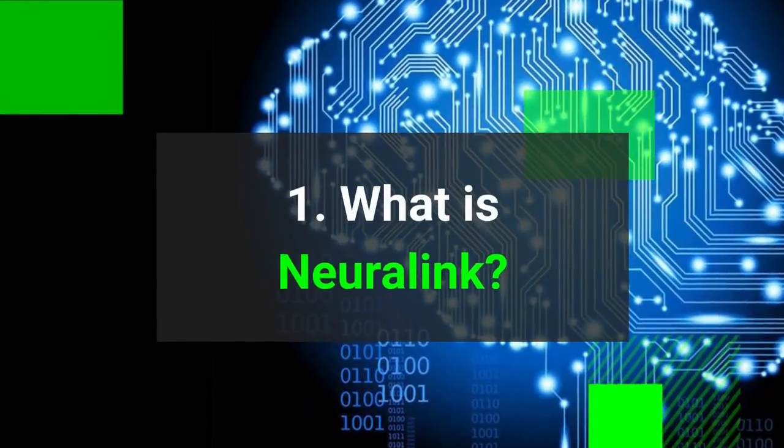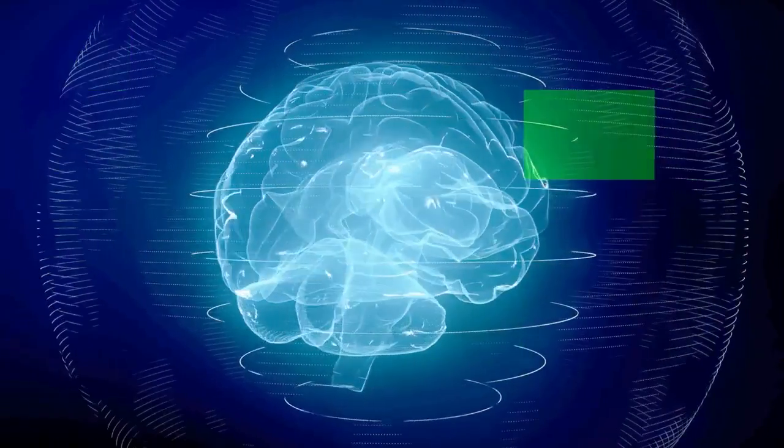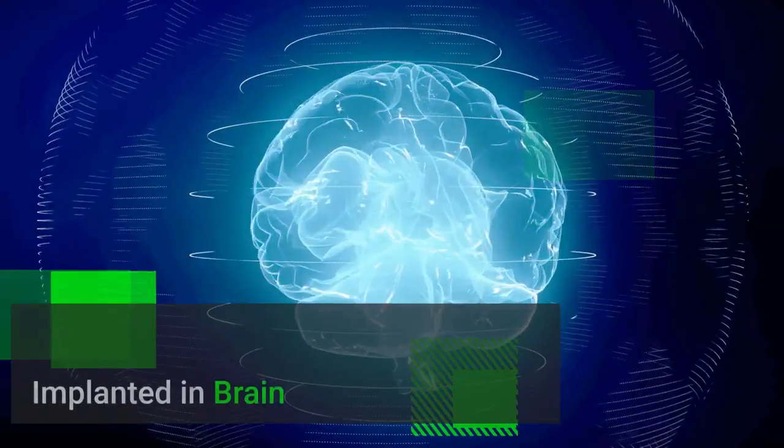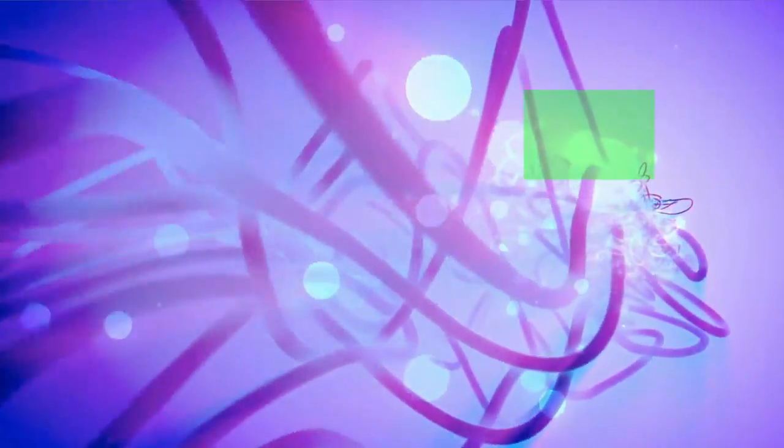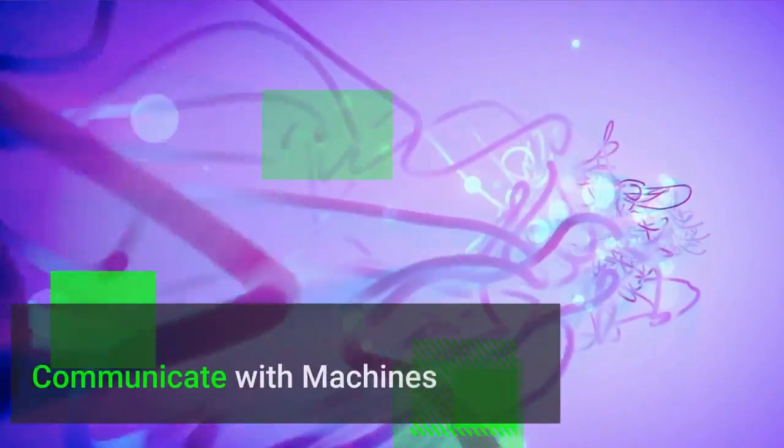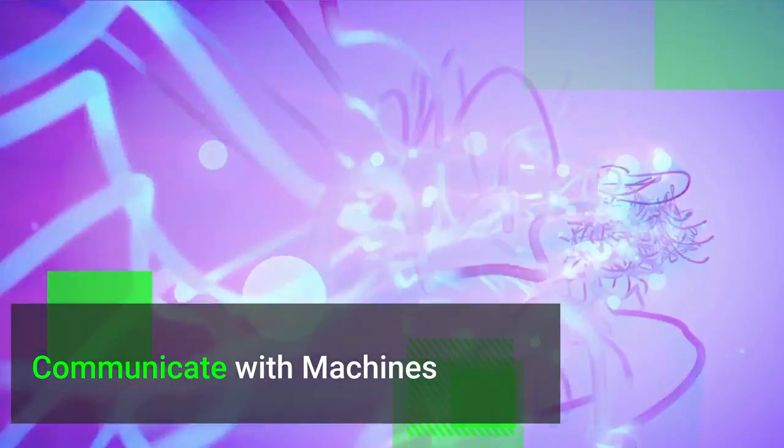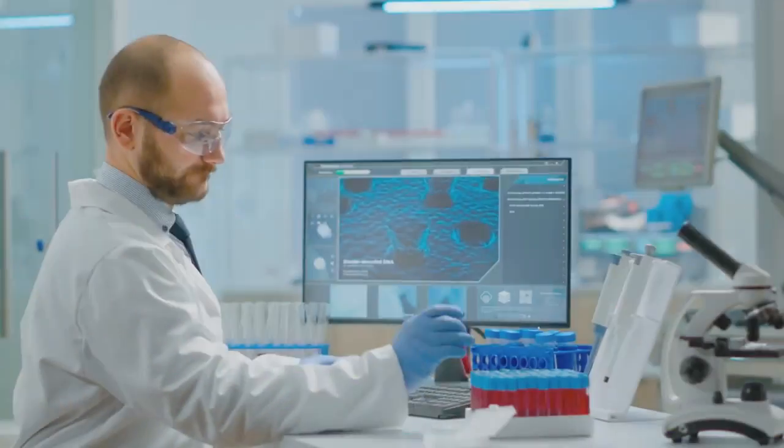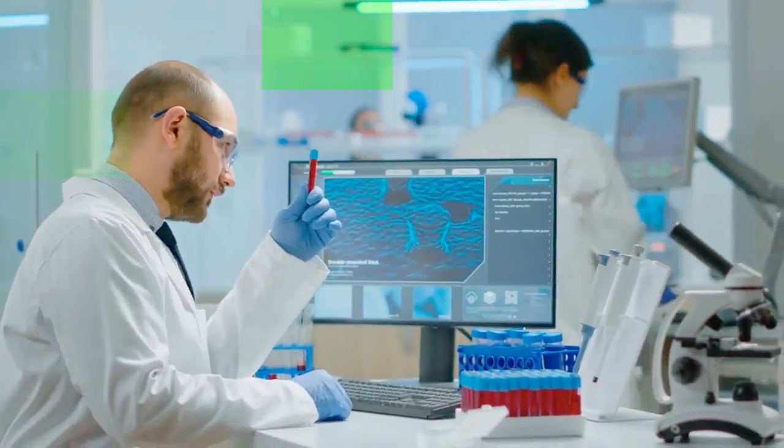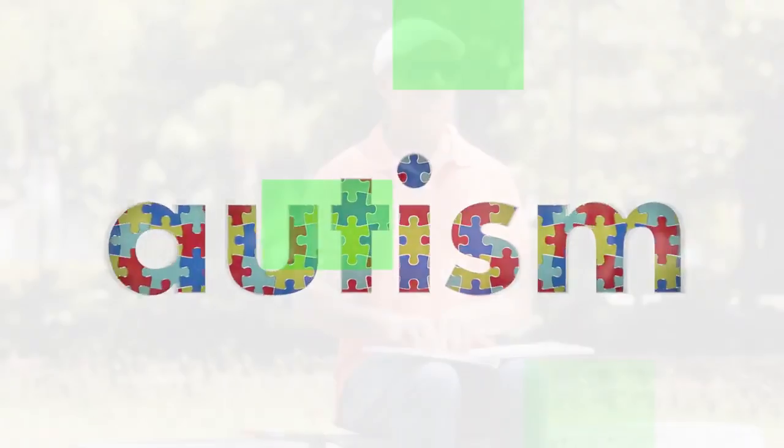What is Neuralink? Neuralink is a device that will be surgically implanted into your brain. Wait, what? Yes, you heard it right. Once the Neuralink is embedded into your brain, you'll be able to communicate with machines and even control them.